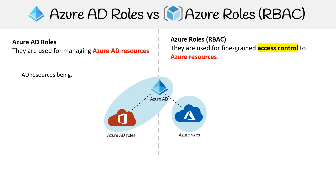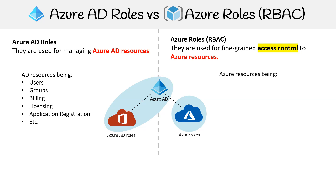Active Directory resources include users, groups, billing, licensing, application registration, etc. Azure resources include virtual machines, databases, cloud storage, cloud networking, etc.